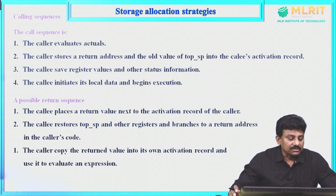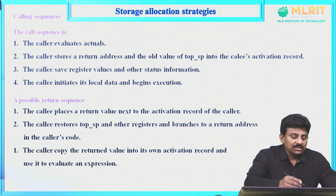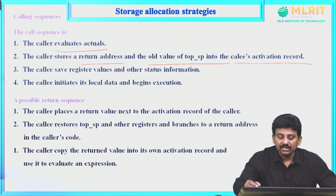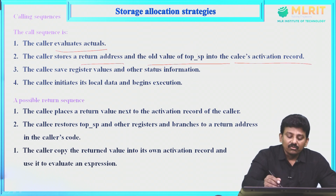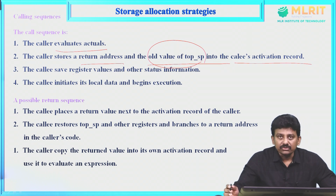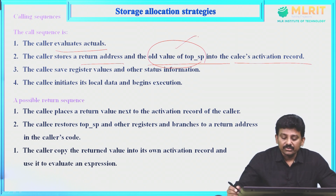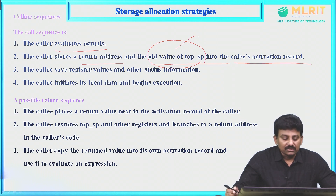Here are the calling sequences. The caller evaluates the actuals — the caller passes parameters to the called procedure. The caller stores the return address and the old value of the top stack pointer (top SP) into the callee's activation record. This old value of top SP is used when control returns to the main program after the callee function completes. The callee will use this old value whenever control returns to the caller.